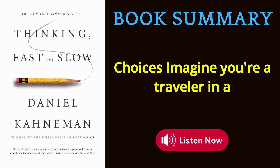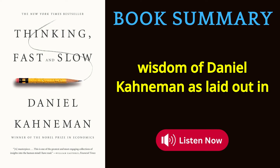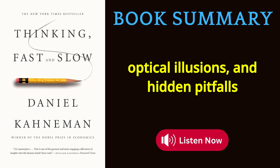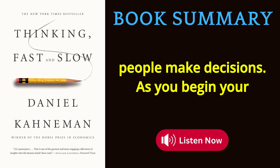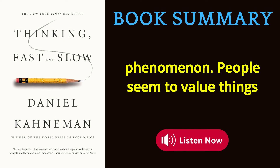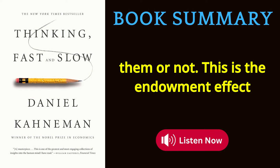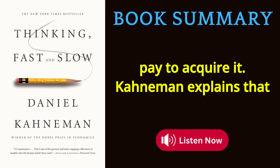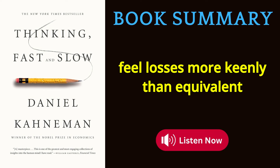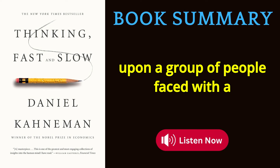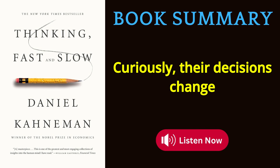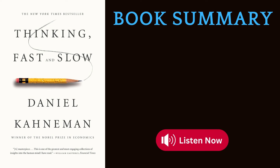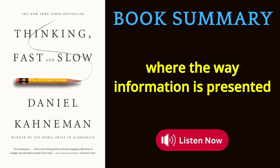Part 4: Choices. The endowment effect reveals that people value things differently depending on whether they own them — individuals demand much more to give up an object they own than they'd pay to acquire it, stemming from our tendency to feel losses more keenly than equivalent gains. A group faced with choosing between two medical treatments changes decisions dramatically depending on whether outcomes are framed as lives saved or lives lost, even with identical statistics — this is the power of framing effects.